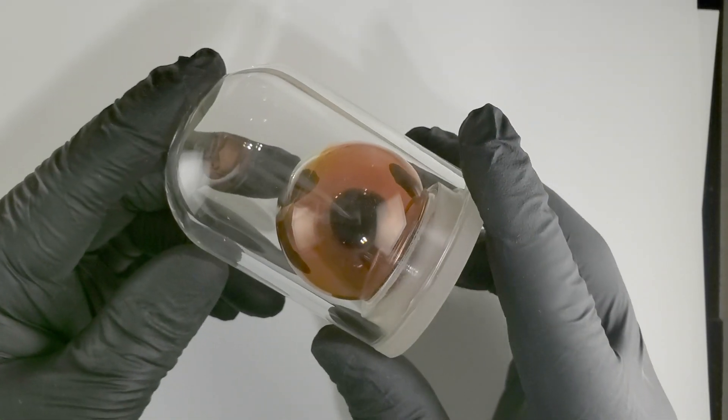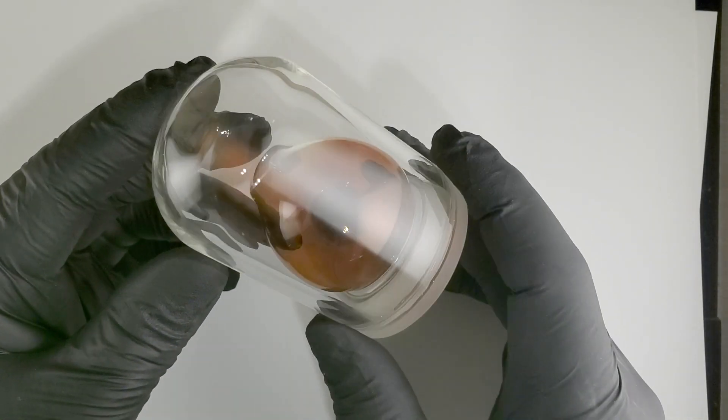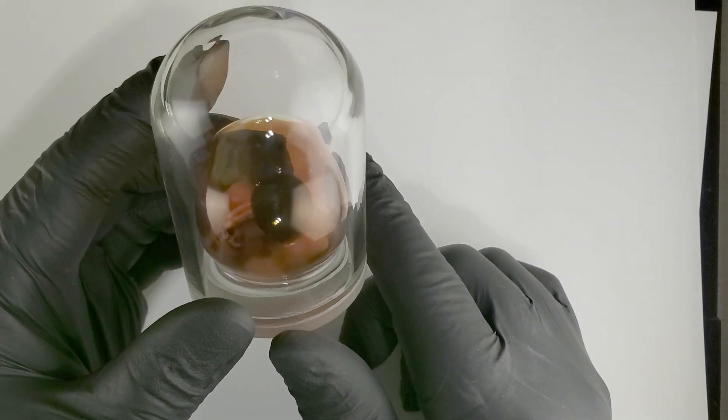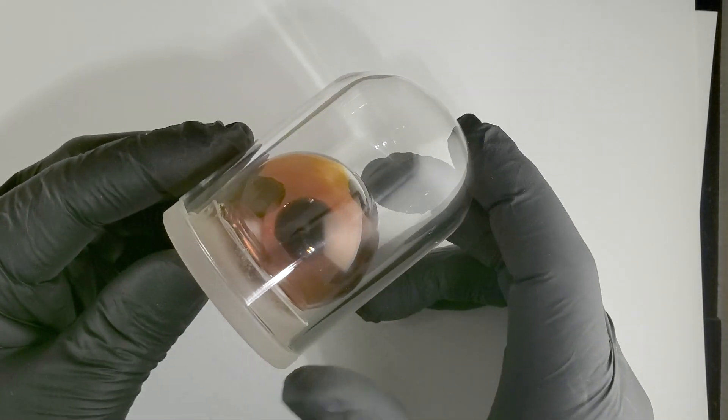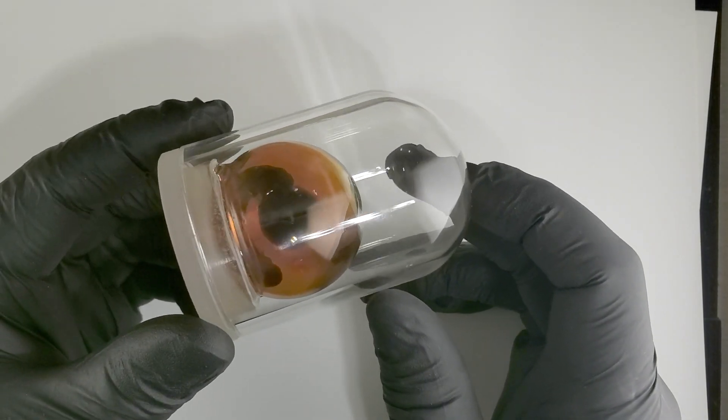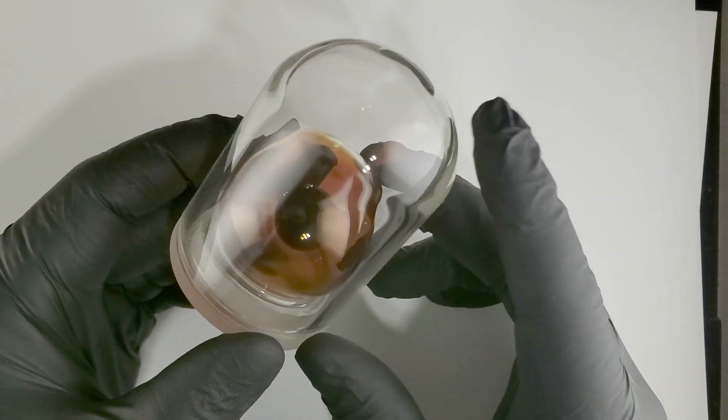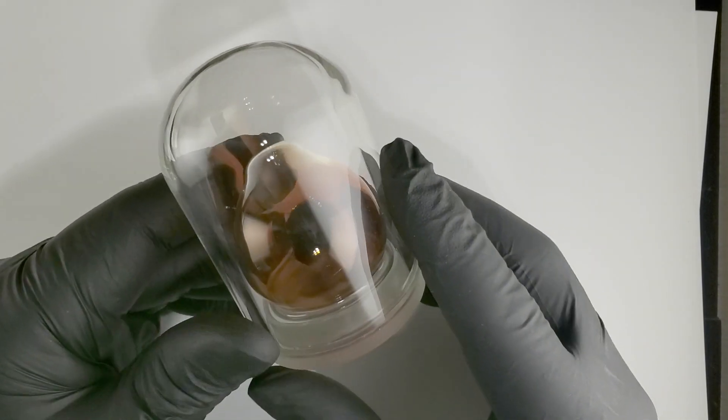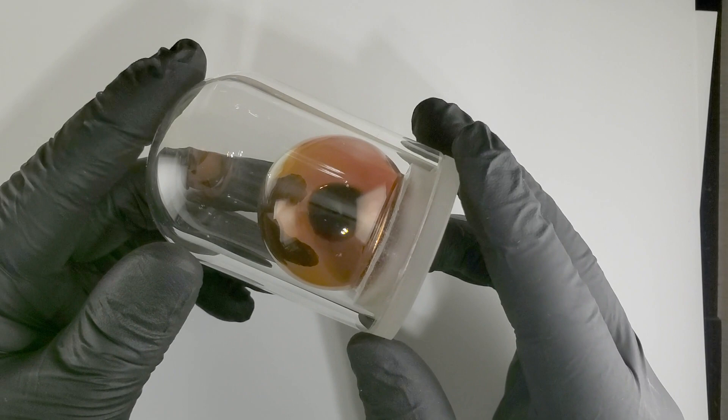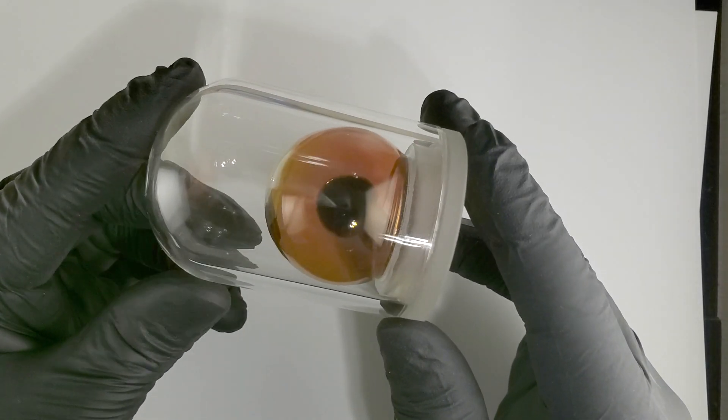We have here one of new items that Luciteria will be carrying. This is a dome filled with bromine, liquid bromine, and it is an absolutely fascinating element, quite deadly.